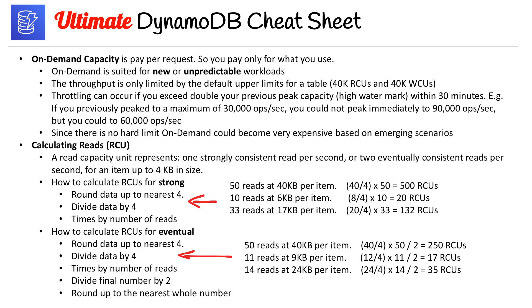To calculate RCUs for eventual consistency: round data up to the nearest 4, divide by 4, multiply by the number of reads, then divide the final number by 2 (rounding up to the nearest whole number). I'm hoping you're printing out this cheat sheet on the day of your exam so you can look through these examples and make sure you know them.